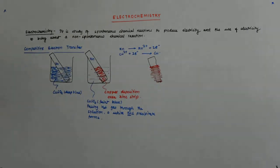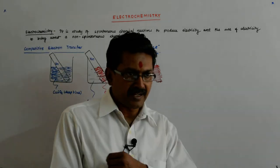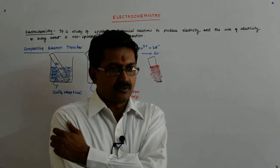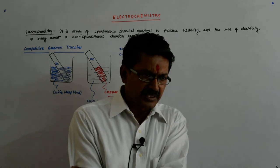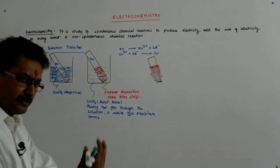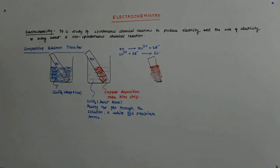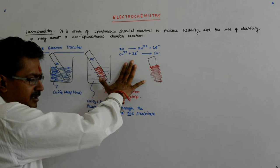Copper ions are mostly blue in solution — not always, but generally. Iron is normally green, zinc is white, aluminum is also white. More about that we will study in coordination compounds. So this reaction has occurred.